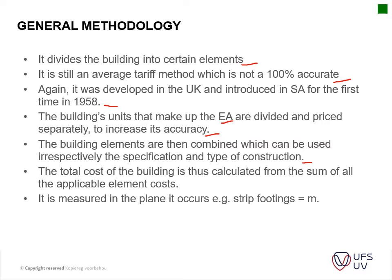The total cost of the building is calculated from the sum of all the applicable elements. You don't have special factors that you have to factor in; you build up your rates by actually measuring each item and getting an elemental tariff that you can use for the different sections. It is measured in the plane it occurs in — for instance, strip footings are measured in meters and surface beds are measured in square meters.